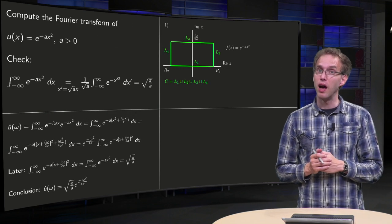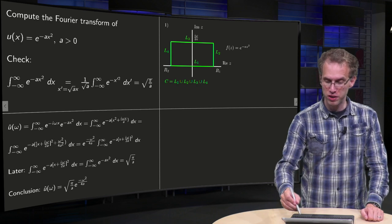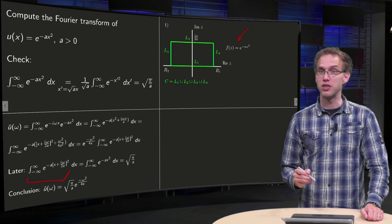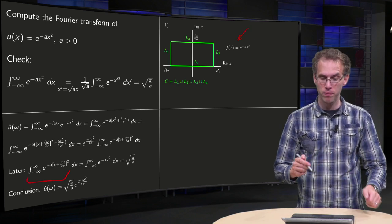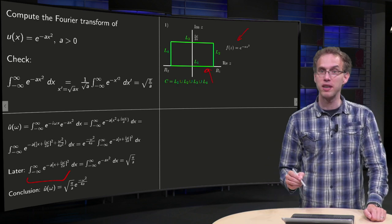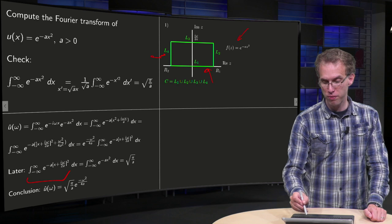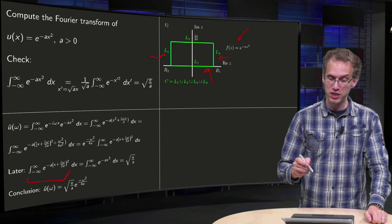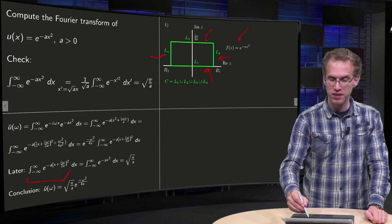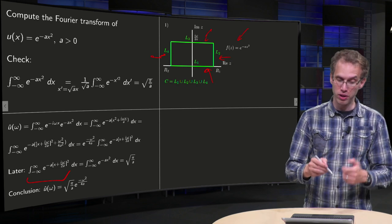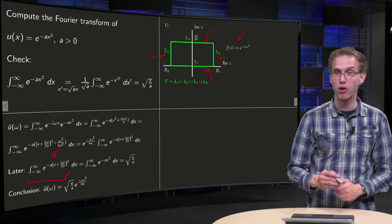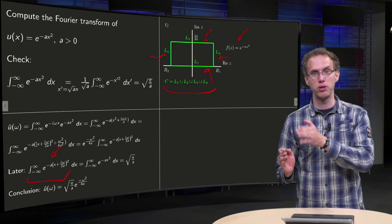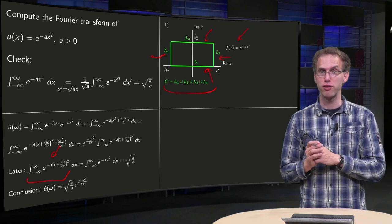So what do we do? First we define a function f(z) = e^(-az²). We want to compute this integral in the end, so what do we take as our contour? Along the real axis we are happy — that will be our L1. Along L2 and L4, the parts where we are going to close, we will make sure that our integral vanishes, and then we take L3 at height iω/2a, such that it will exactly give us the integral we want. So our contour consists of L1, joined L2, joined L3, joined L4. That's the first step.